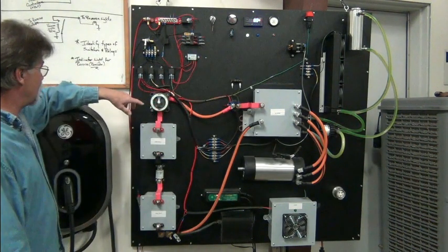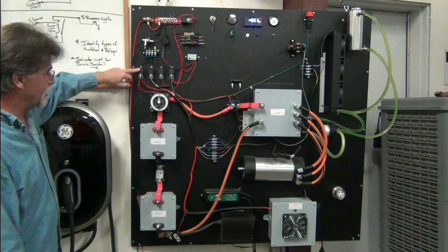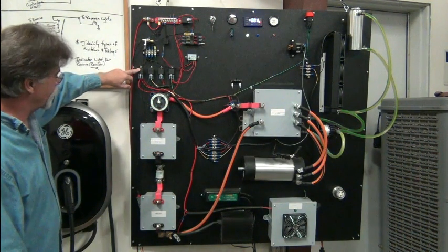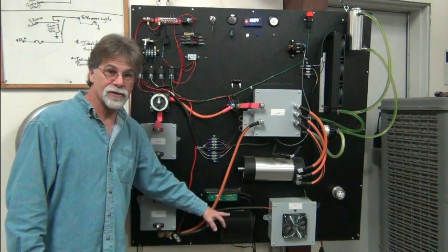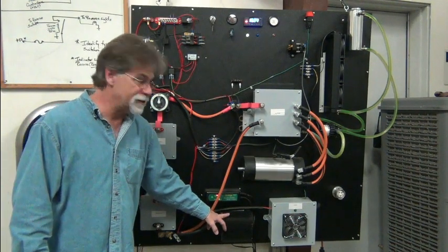Our key switch relay, which is this one right here, the key switch relay comes on. And what that does is that allows traction pack voltage to go to our DC to DC converter.